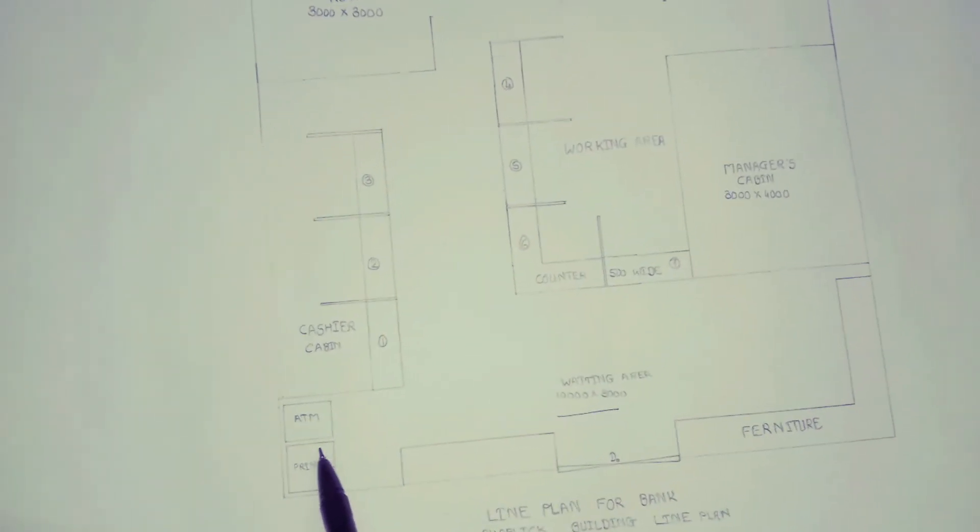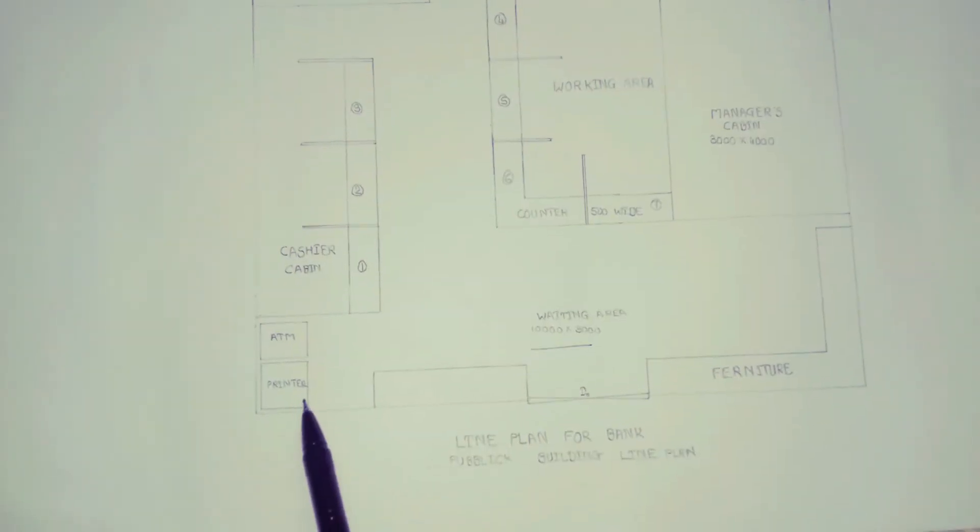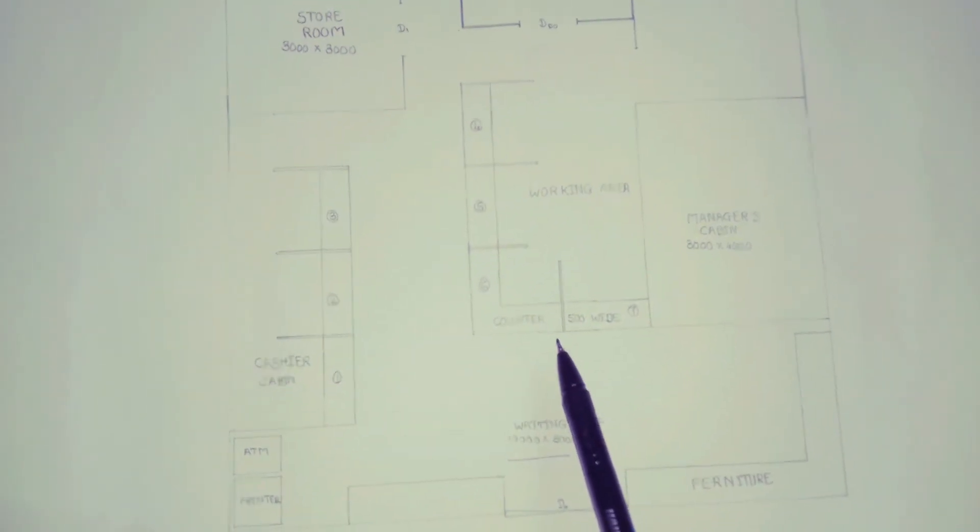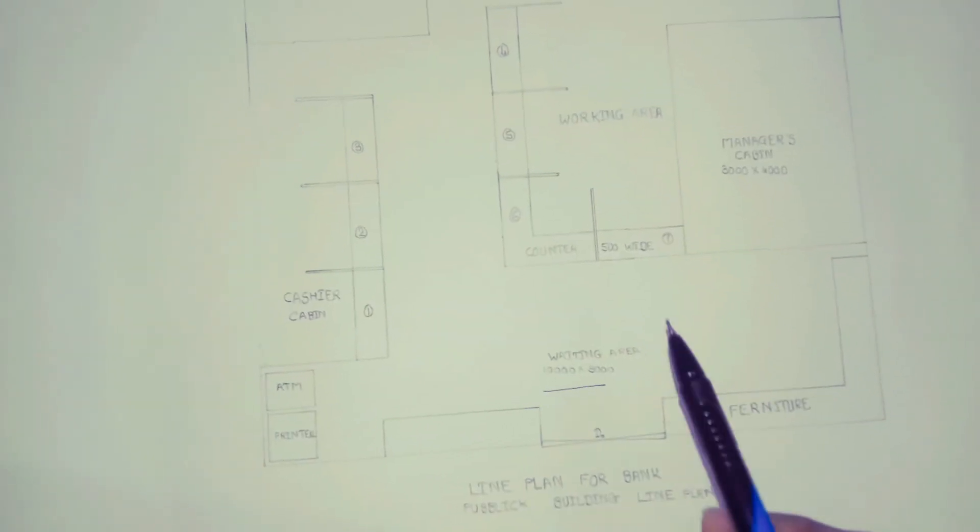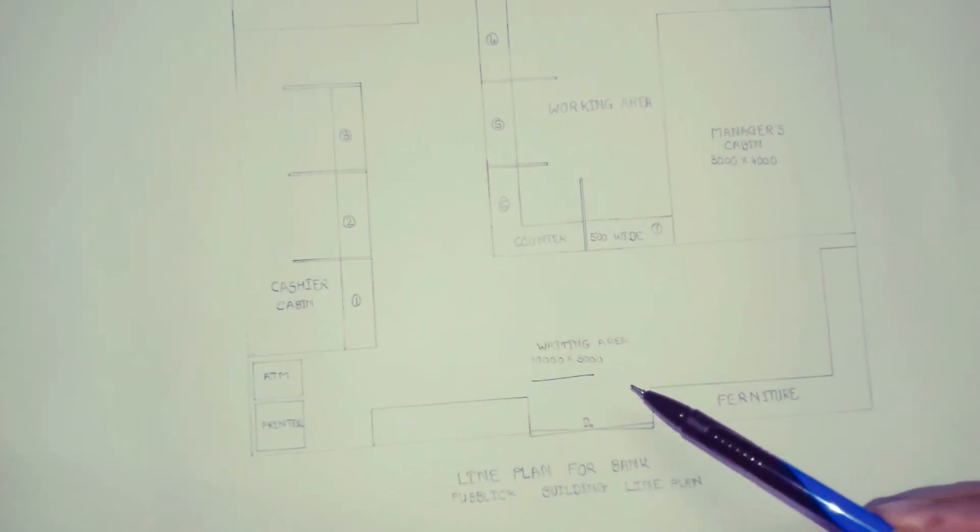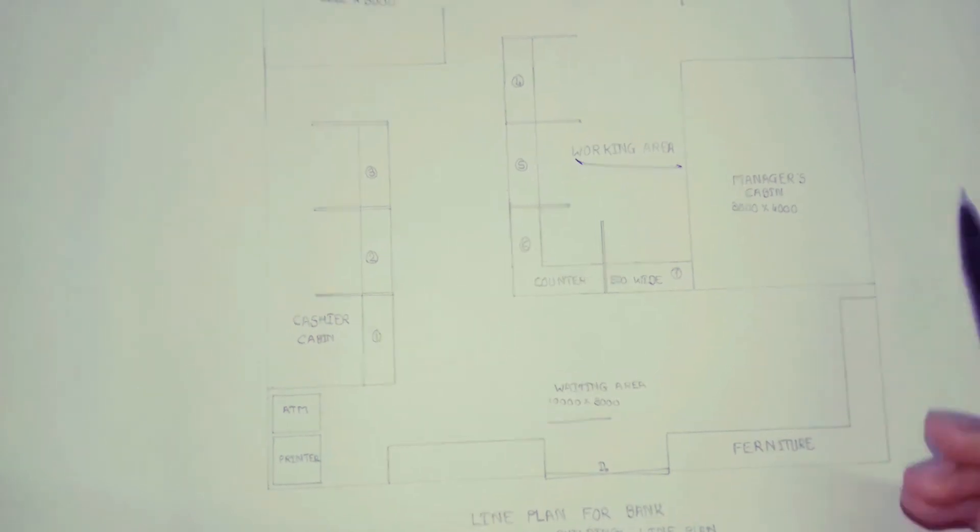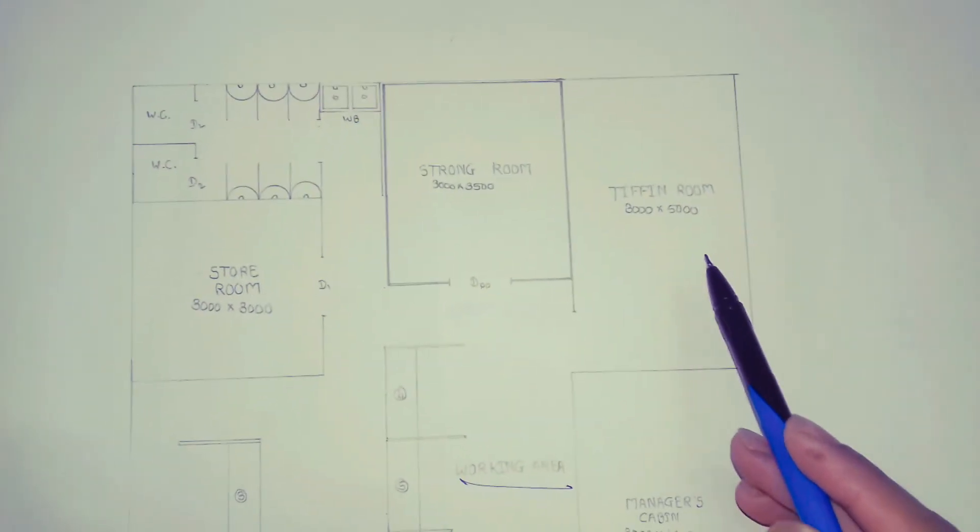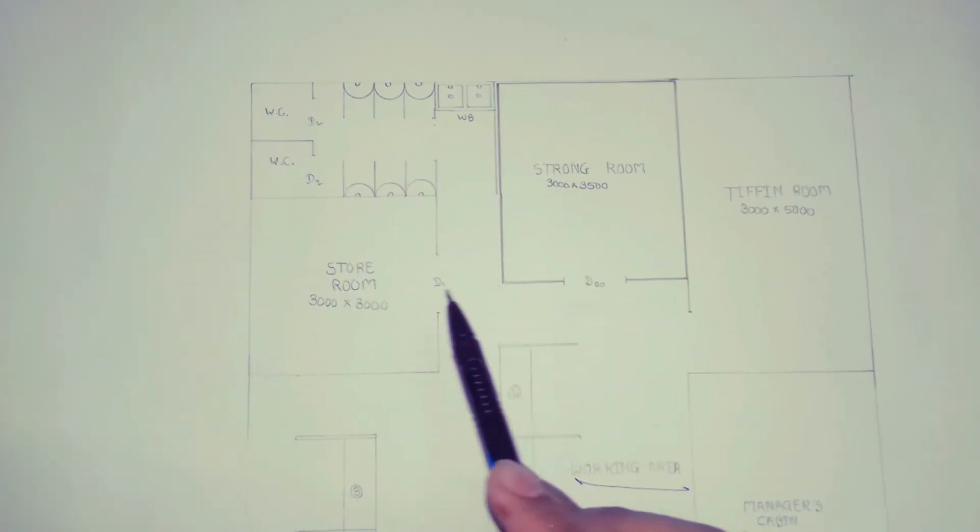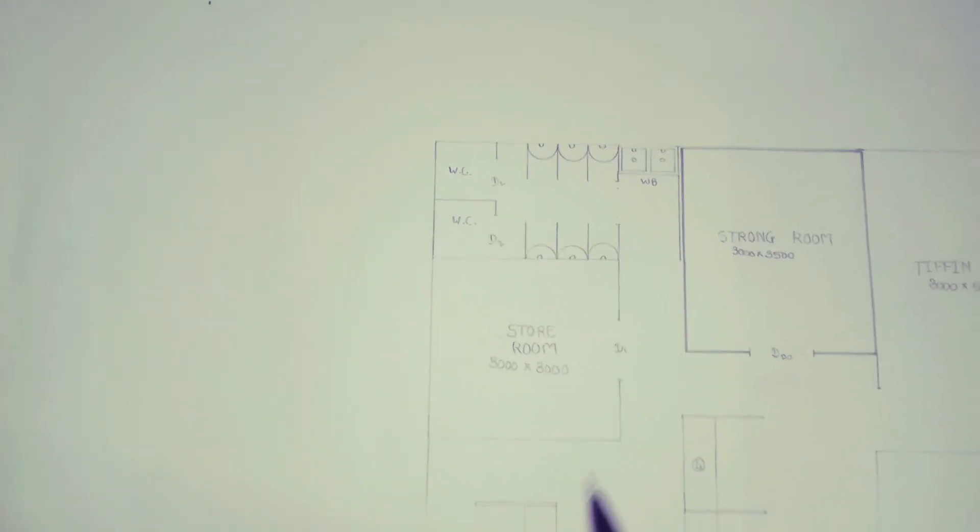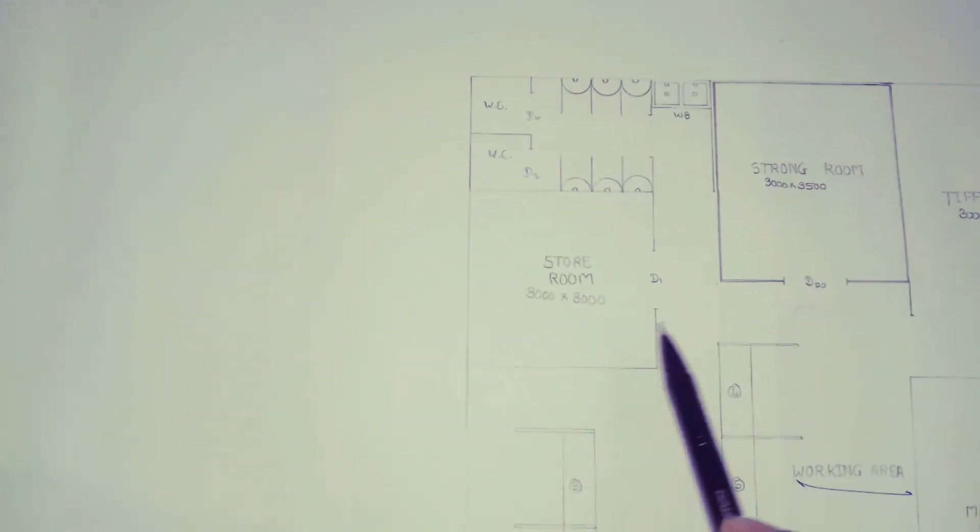The waiting area, ATM printer, cashier's cabin, counter separating the working area and waiting area. Working area, manager's cabin, tiffin room. Gonna have the strong room in here and WC. The store room is there in the bank.